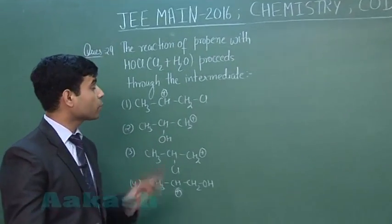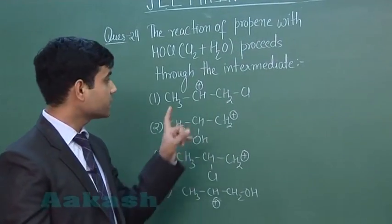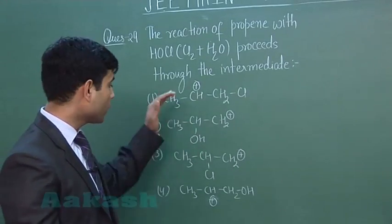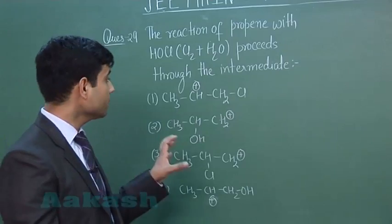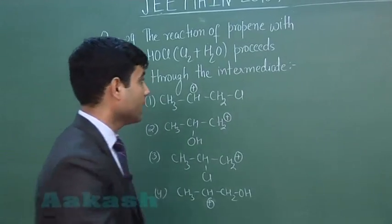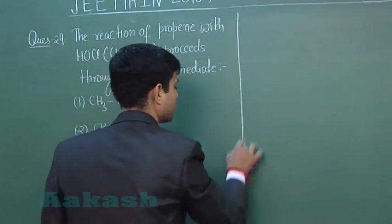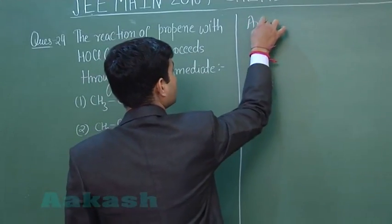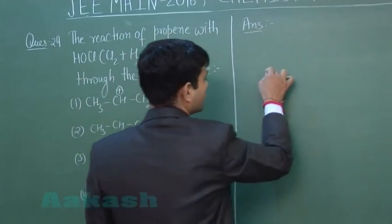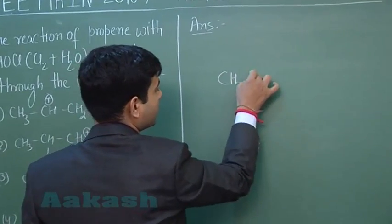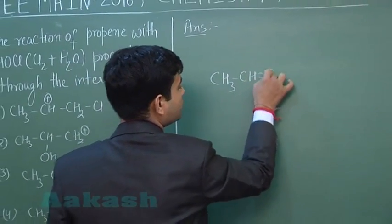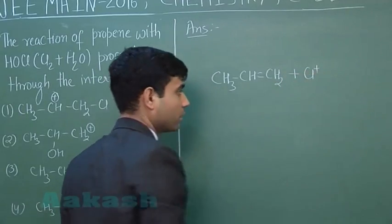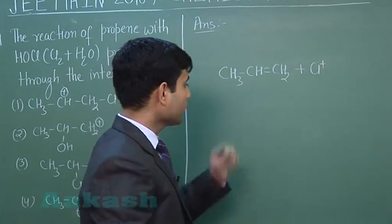This question says: the reaction of propene with HOCl (Cl2 plus water) proceeds through which intermediate? We have 4 options. In this reaction, Cl+ reacts. If this is propene — CH3-CH=CH2 — and Cl+ attacks this propene, what will happen?